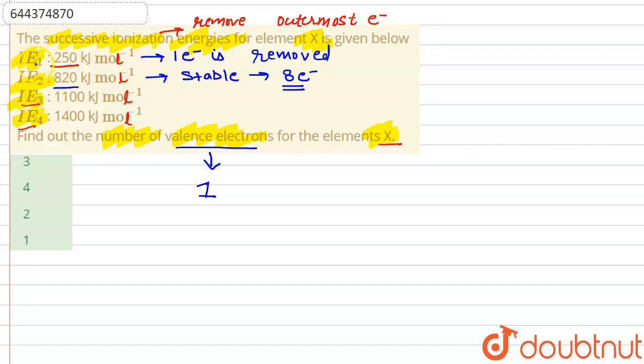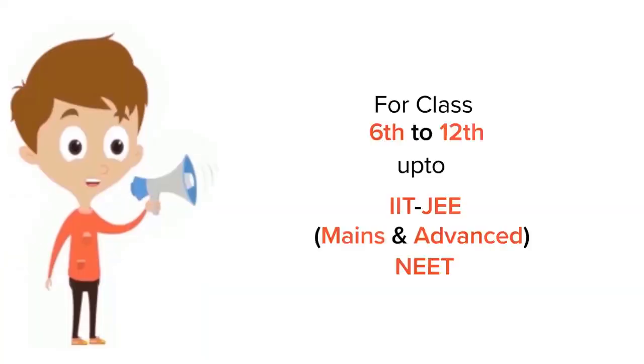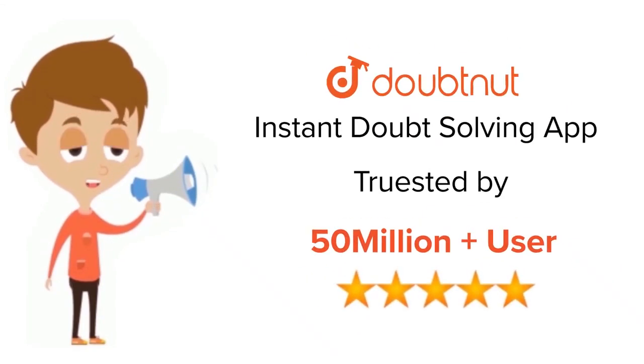The correct option is option D, which is one valence electron. For class 6 to 12th, IIT, and NEET level, trusted by more than 5 crore students, download the Doubtnet app today.